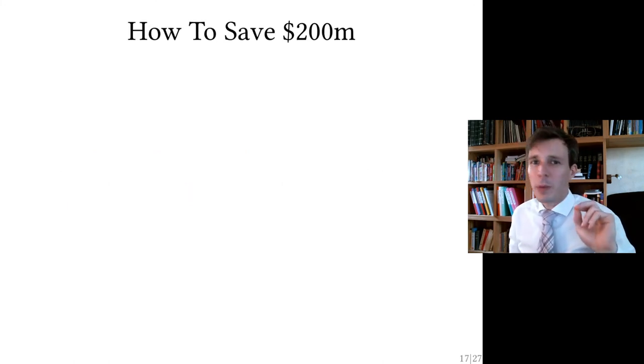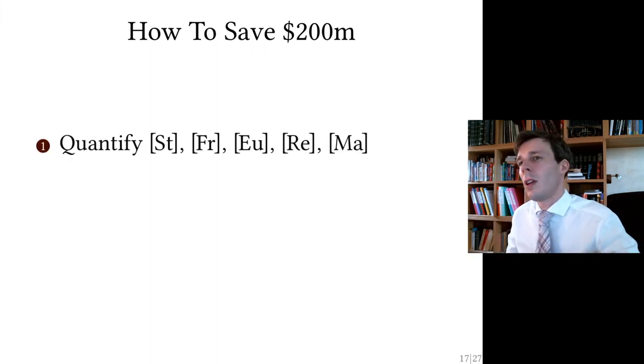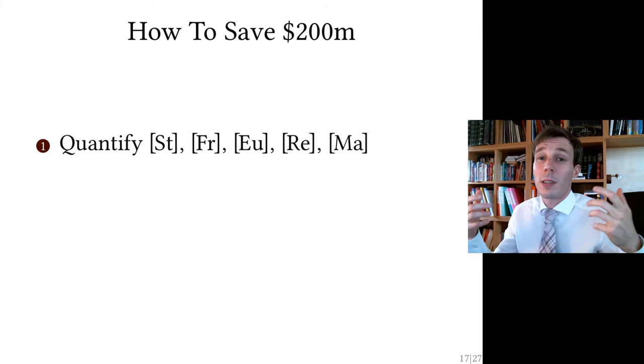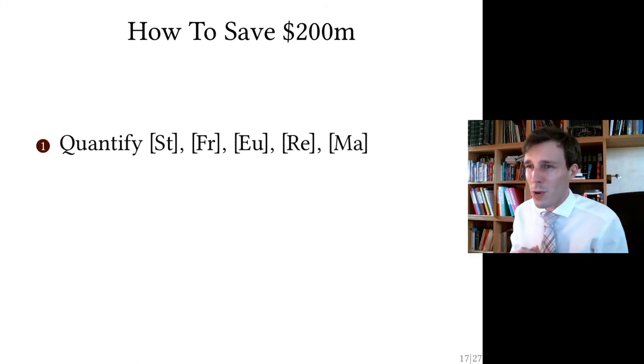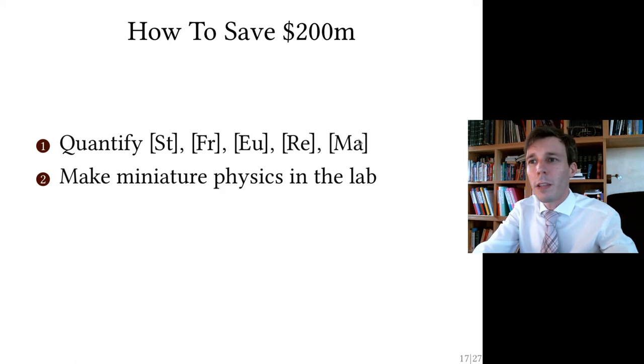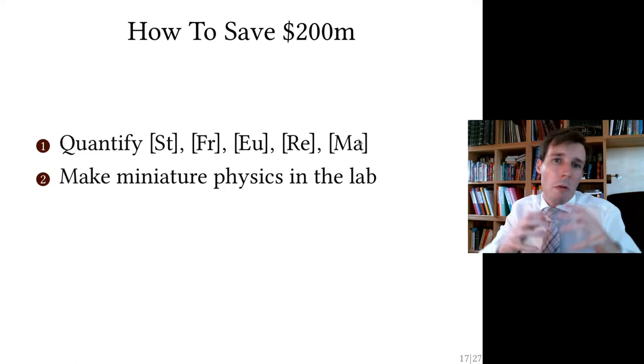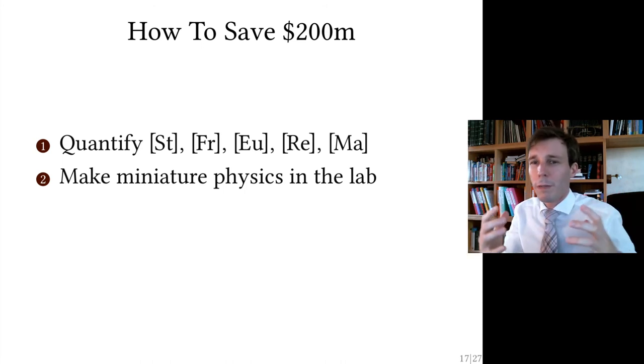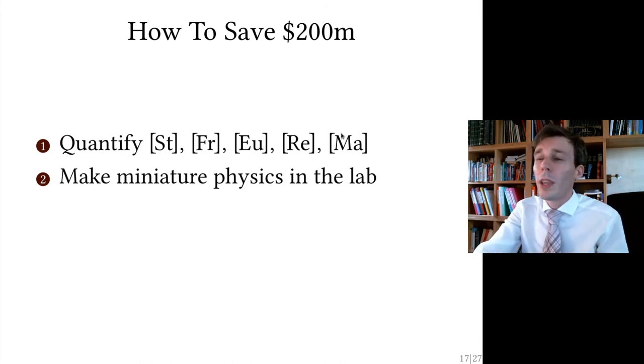And so this is the recipe, again, to save 200 million dollars, to save yourself from building one complete new machine every time you make a modification. The difficult part is the first, the second part, actually. The first part is the math. You quantify the non-dimensional parameters inside the non-dimensional Navier-Stokes equation. These are the Strouhal, the Froude, the Euler, the Reynolds, and also sometimes in compressible flow, the Mach number. The difficult part is to make miniature physics in the lab, or maximized, if you want, the enlarged version of the physics inside the lab. And these involve, in theory, reproducing all five of those numbers.